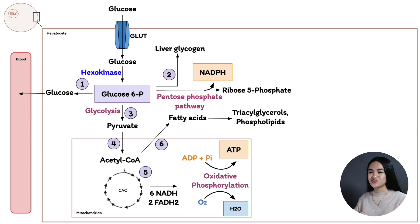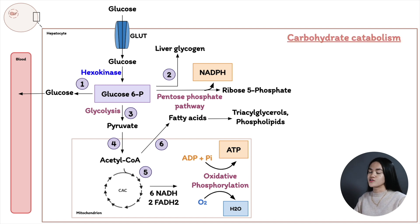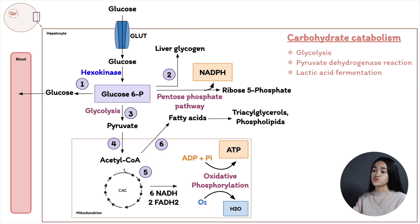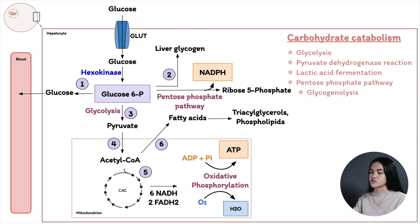There are two types of metabolism. Catabolism is the breakdown of complex macromolecules into simple, smaller molecules releasing energy. In carbohydrate catabolism this includes: glycolysis — the oxidation of glucose to produce two molecules of pyruvate; the pyruvate dehydrogenase reaction converting pyruvate to acetyl-CoA; lactic acid fermentation — taking glucose and converting it to lactate anaerobically; the pentose phosphate pathway; and glycogenolysis — the breakdown of glycogen to yield free glucose molecules.